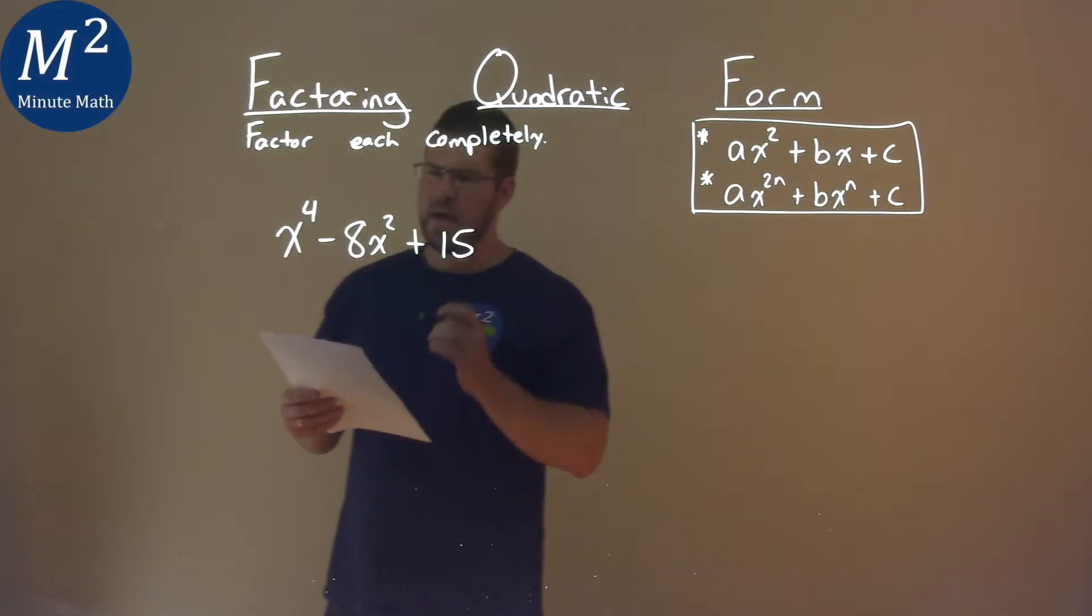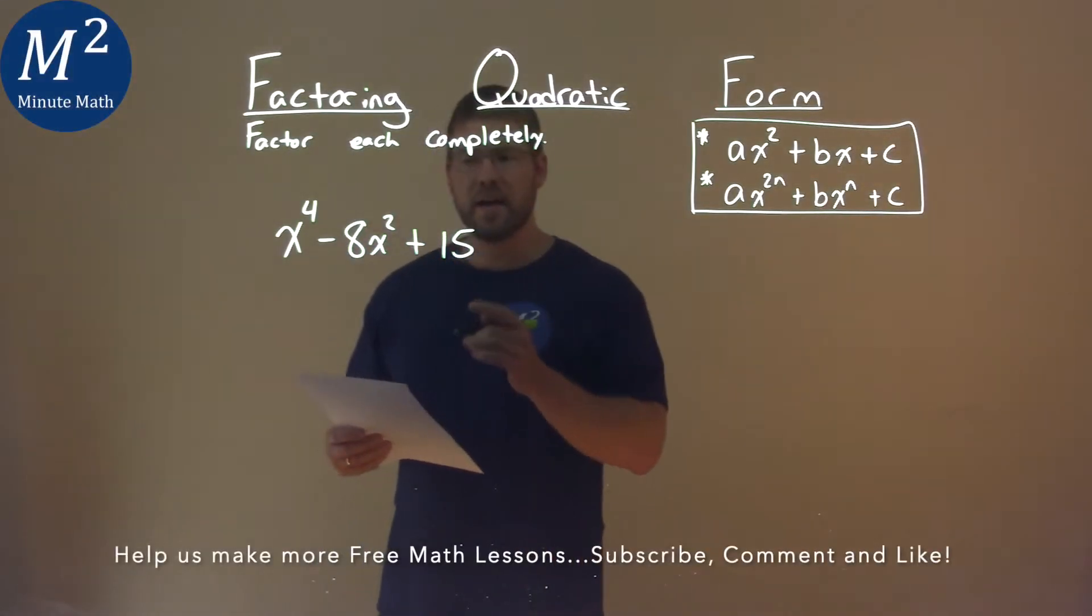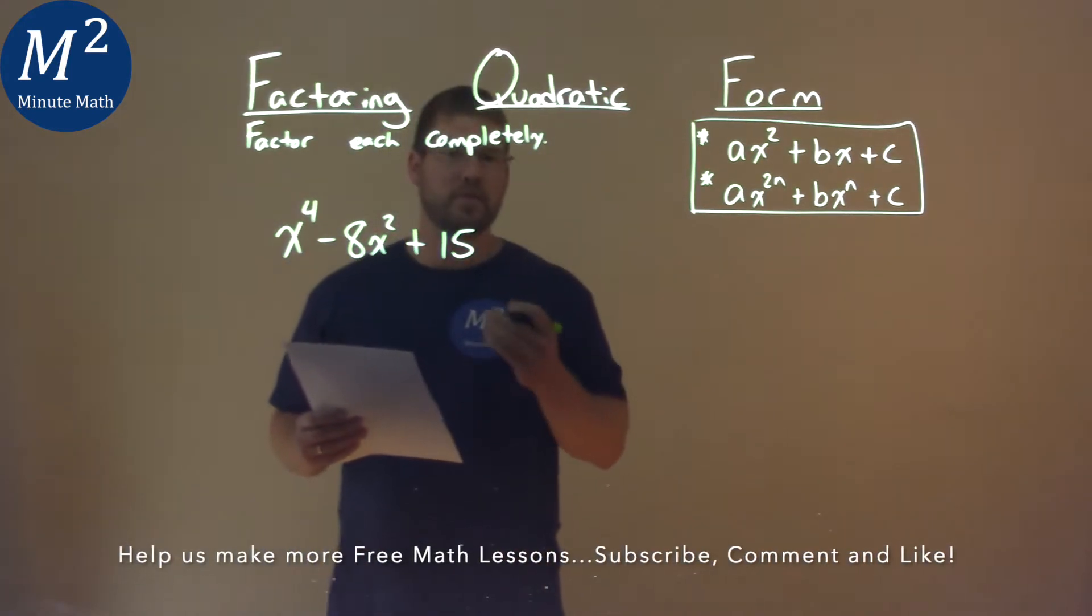We're given this problem right here, x to the fourth power minus 8x squared plus 15, and we need to factor this completely.